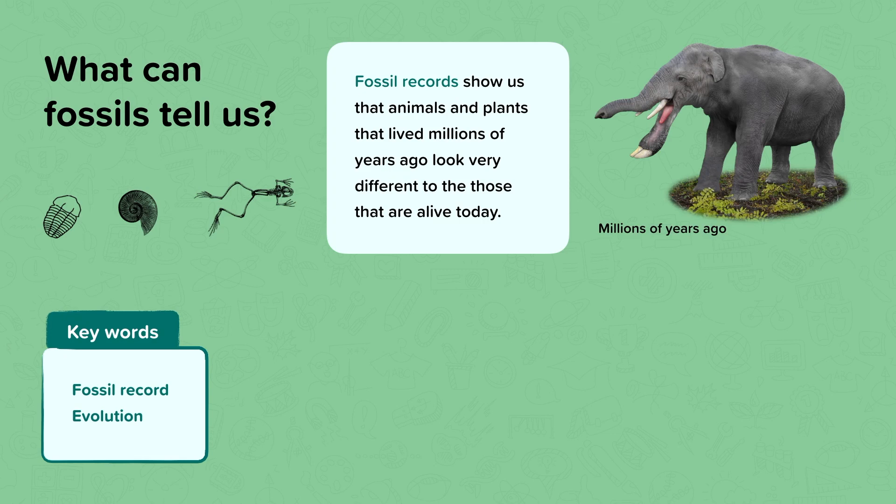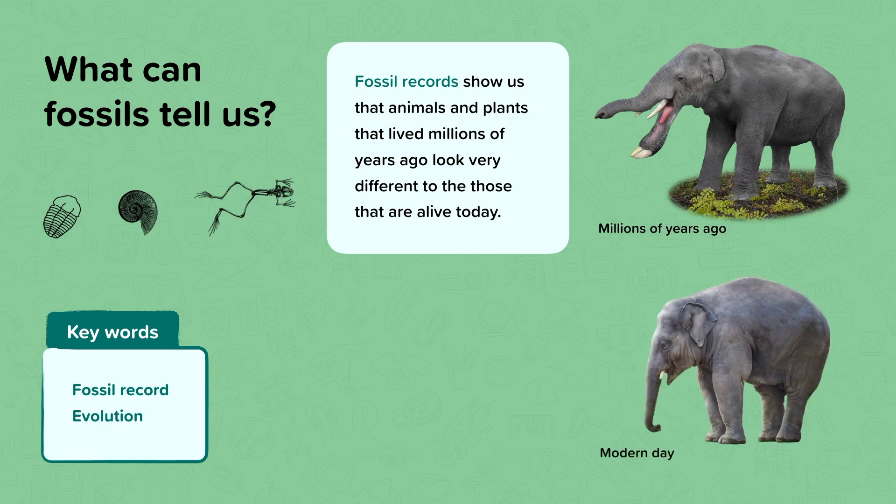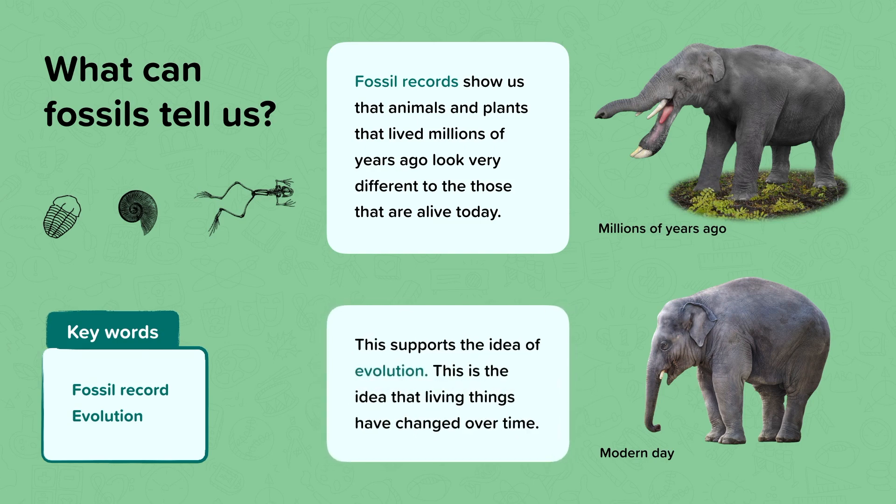Because fossils only show us the hard parts, we have to reconstruct the soft parts of the organism into a model. So millions of years ago, the ancestors of elephants looked a bit like this, whereas today, they look like this. So we can see that there are particular differences that have arisen over time. Having evidence that things have changed over time supports the idea of evolution. How evolution actually happens was most famously suggested by Charles Darwin, who needed lots of fossil evidence to persuade people that evolution had occurred.